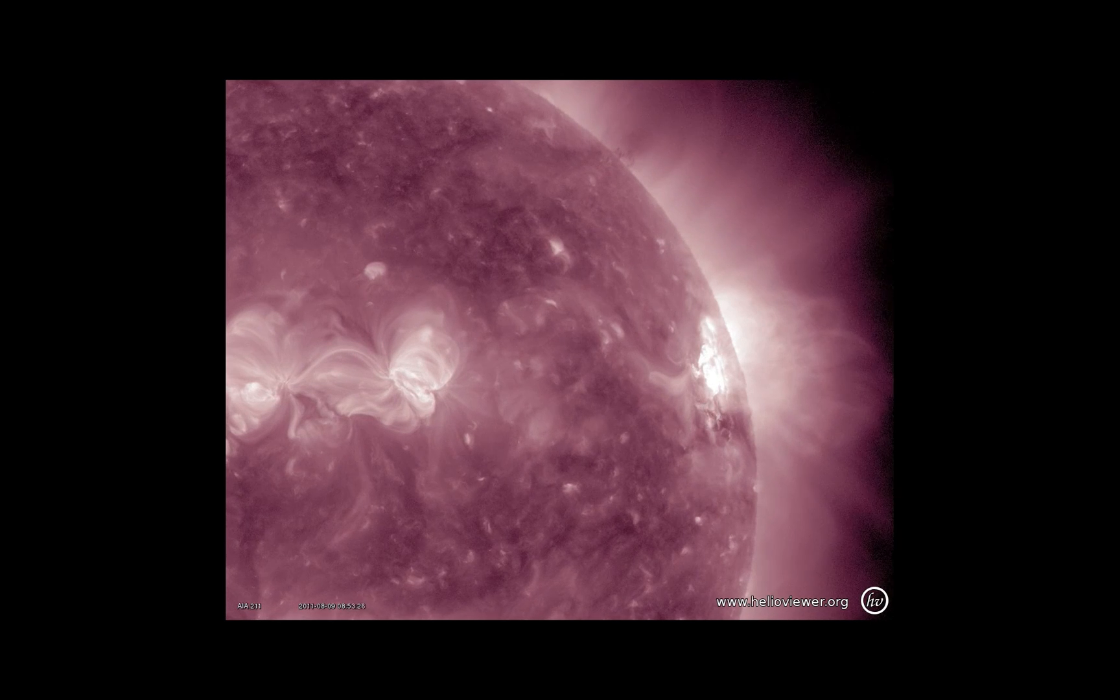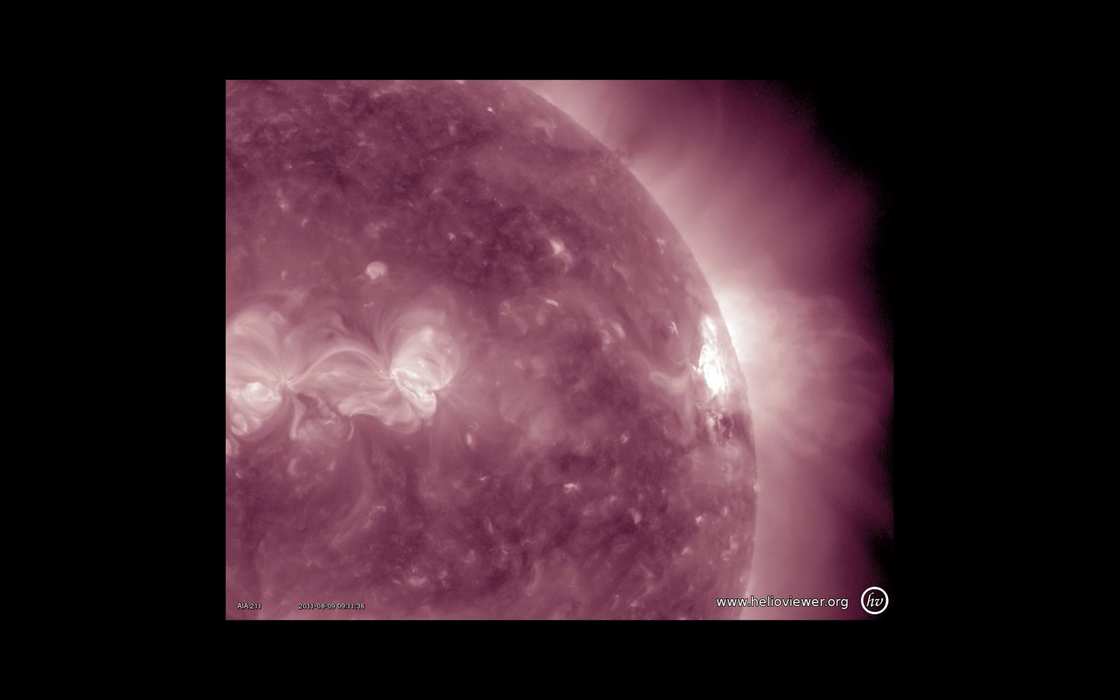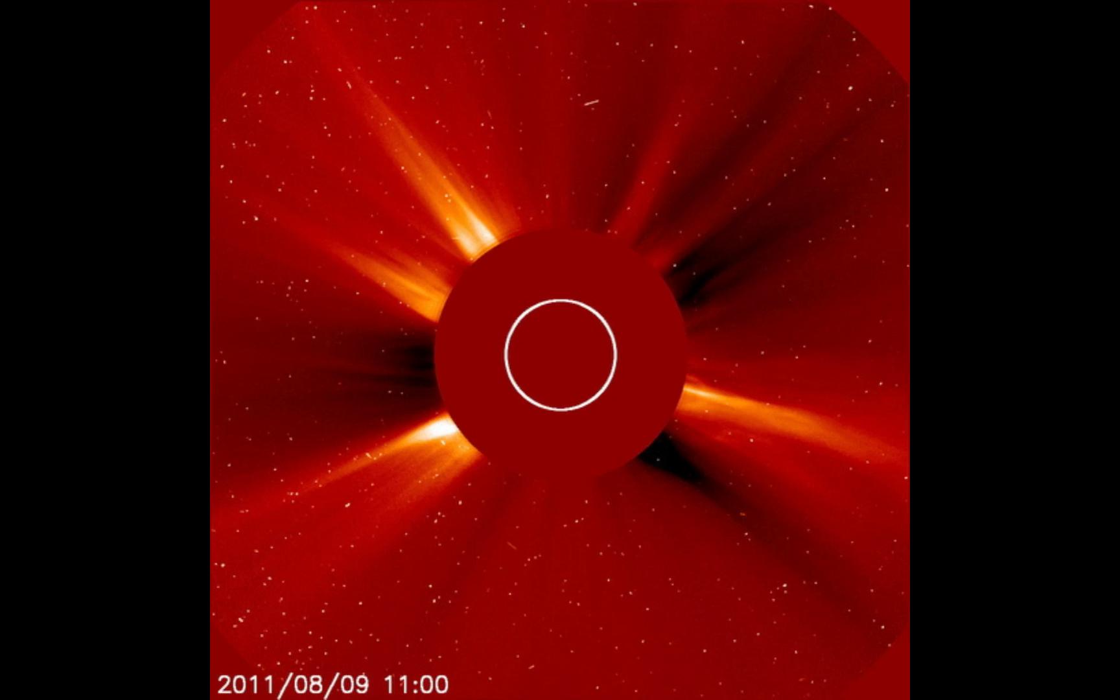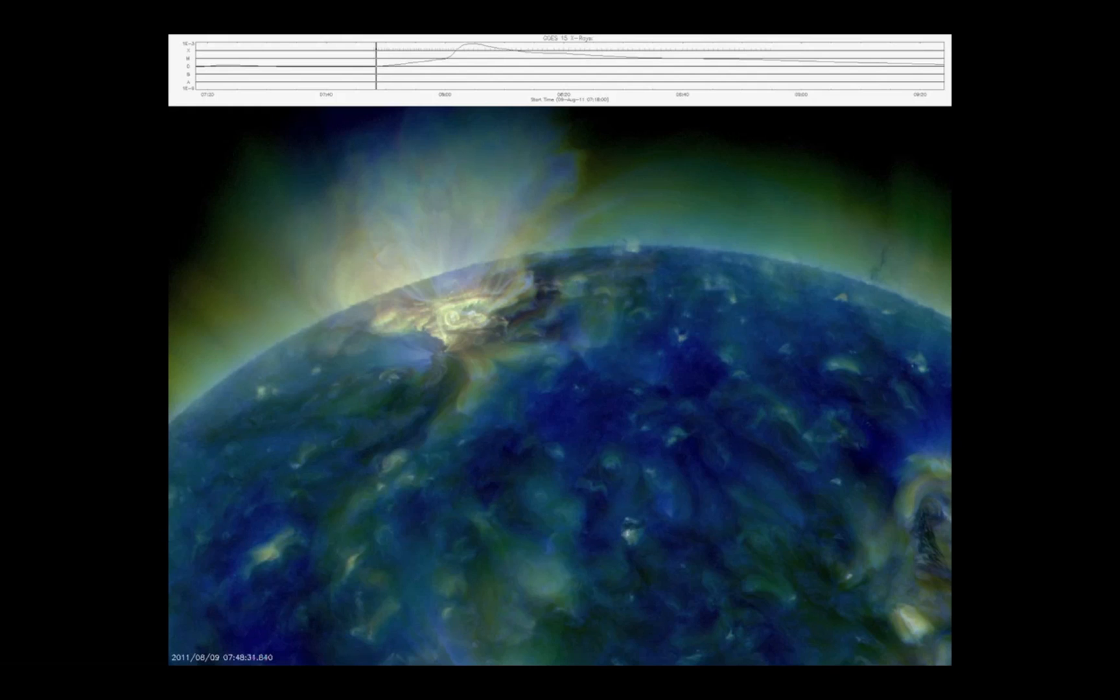Looking at images from the Lascaux chronograph on Soho, you can see there's a CME that comes out the side. But you see all the snow on the image? That's the particles that are impacting the camera on the spacecraft.